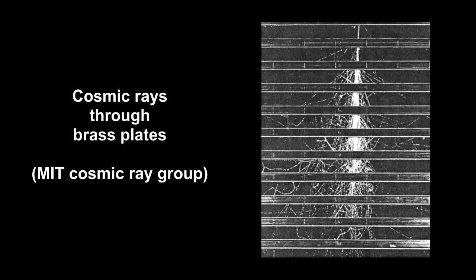Here's what cosmic rays look like in a cloud chamber. These rays are penetrating multiple brass plates, each 13 millimeters thick. To understand these tracks, we'll start with the two charged particles we already know, the electron and the proton.